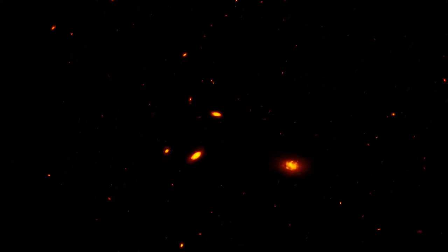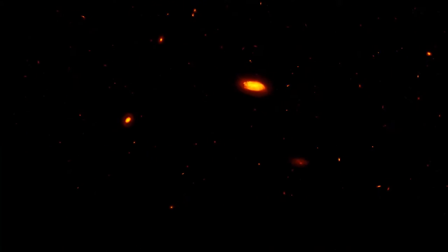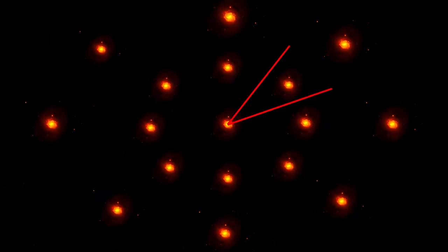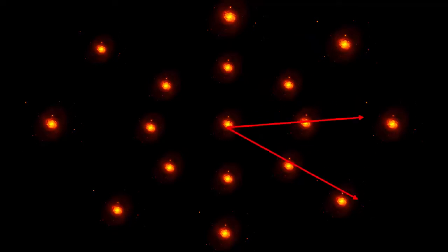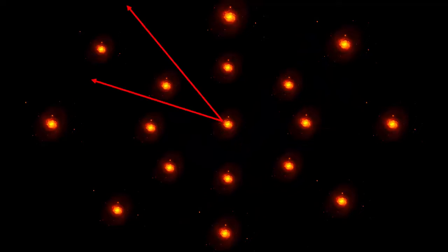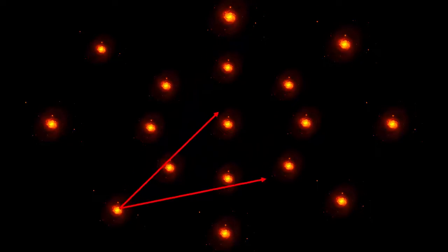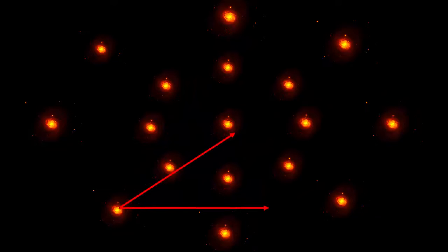When we look out into the universe far enough, we see, on average, the same distribution of galaxies in all directions. In other words, there is no preferred direction in space — it's isotropic. But being isotropic for us doesn't necessarily mean it is isotropic for viewers in far-off locations. It is possible to imagine galaxy configurations where things look the same in all directions from one point of view and not from another, but this is unlikely. Our assumption is that all observers will see the same isotropic distribution of galaxies.